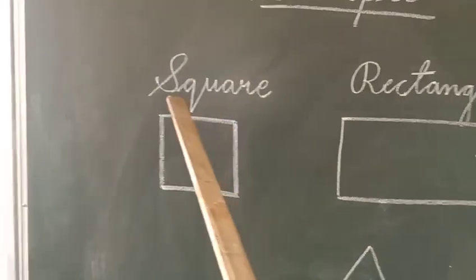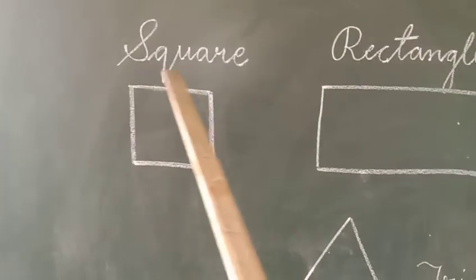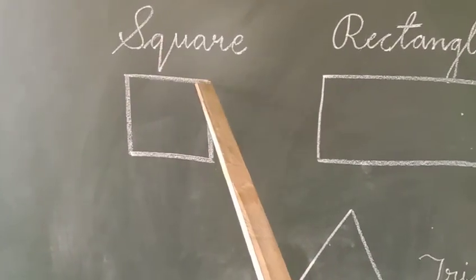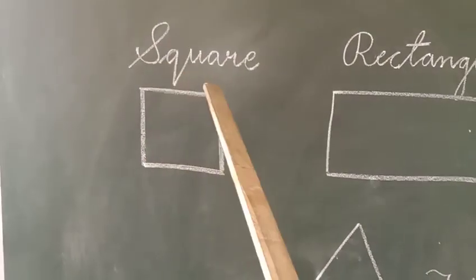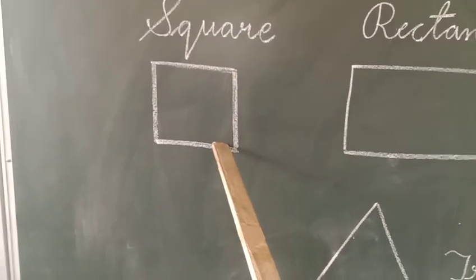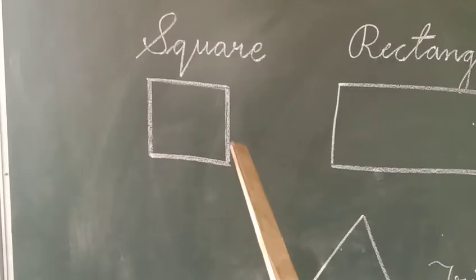all the lines are equal in the square. All lines will be equal in the shape of the square. You can see all lines are equal in size.